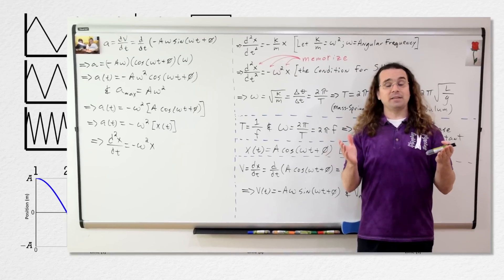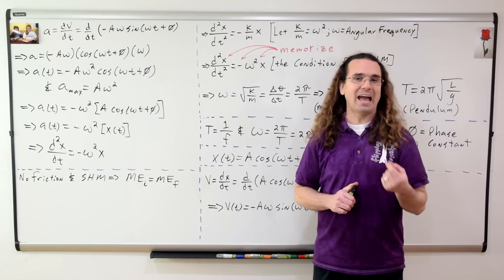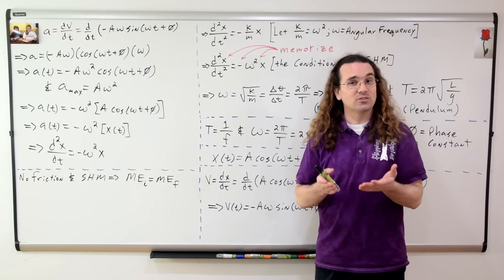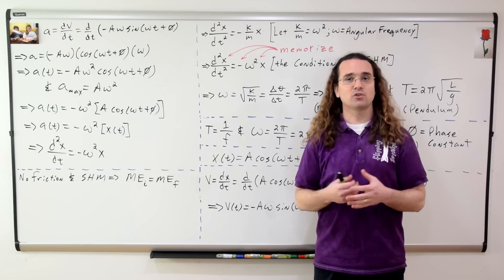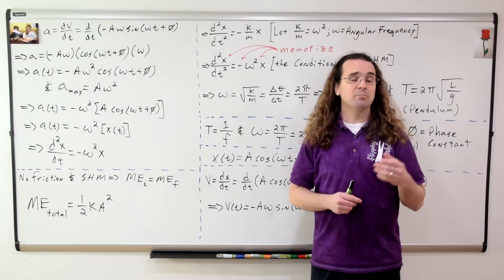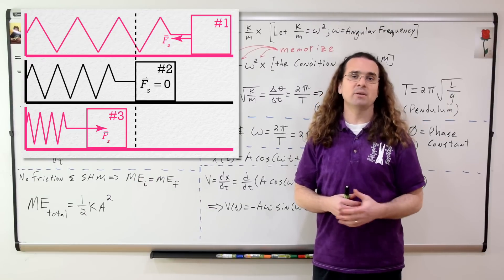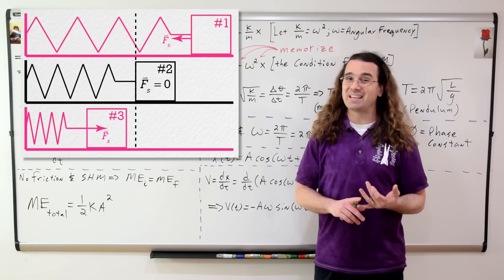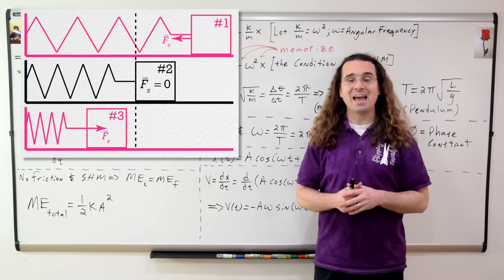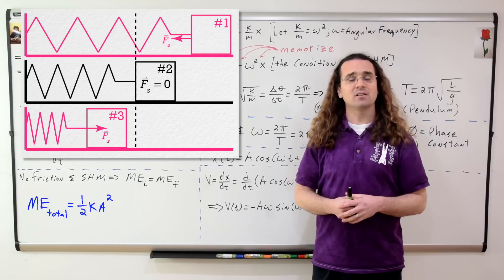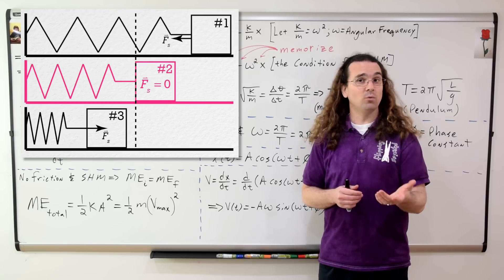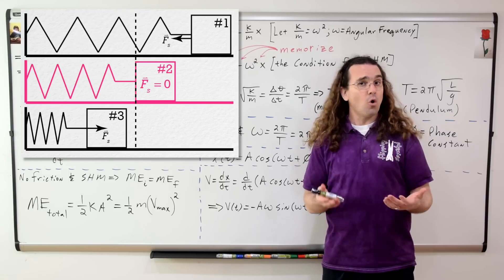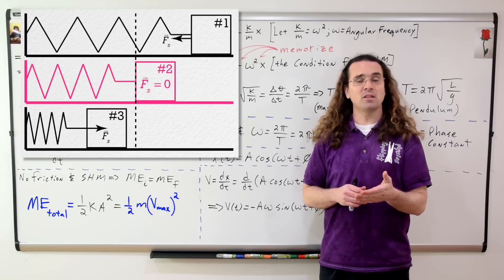Class, is mechanical energy conserved in simple harmonic motion? Yes, it is. Because no energy is added to or removed from the system via work done by an external force, and because no energy is dissipated via work done by friction, mechanical energy is conserved during simple harmonic motion. When the block is at positions one and three, it is at maximum displacement from equilibrium — the amplitude — it is at rest with no kinetic energy, so the total mechanical energy equals one half times the spring constant times the amplitude squared. When the block is at position two, the equilibrium position, the only energy it has is kinetic energy, so the total mechanical energy also equals one half times mass times the maximum velocity squared.